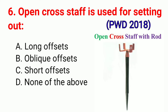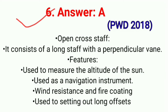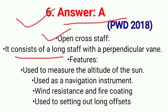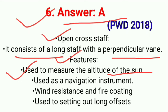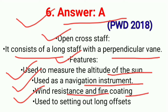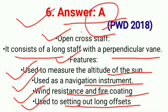Question No. 6. Open cross staff is used for setting out. Correct option A: Long offsets. An open cross staff consists of a long staff with a perpendicular vane. Features: first, used to measure the altitude of the sun; second, used as a navigation instrument; third, wind resistance and fire coating; and last, used for setting out long offsets. Correct option A.